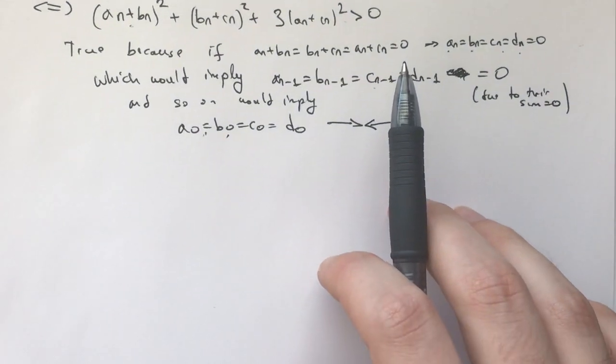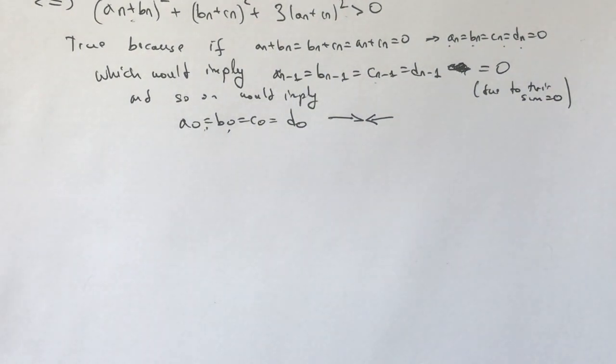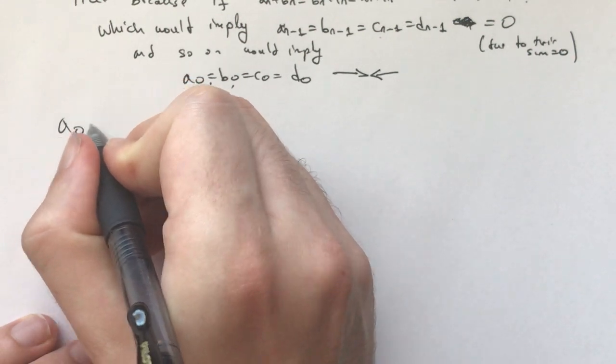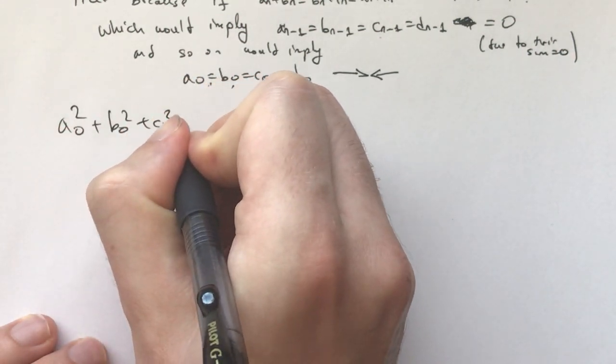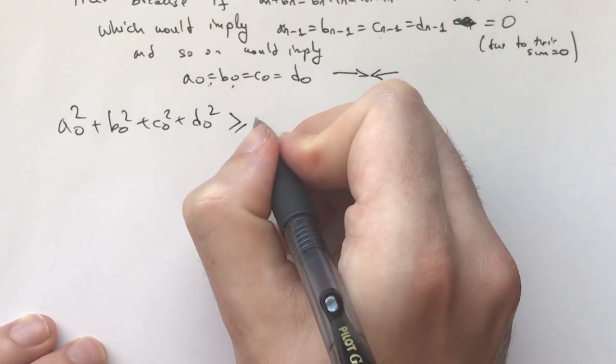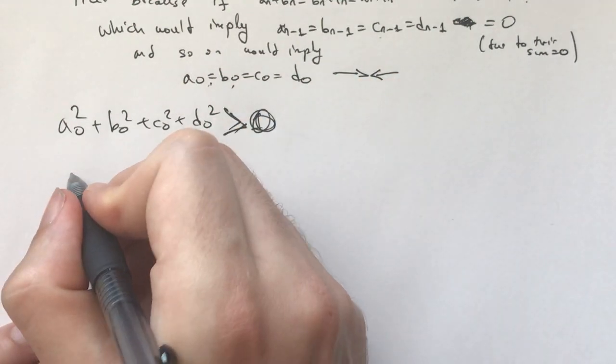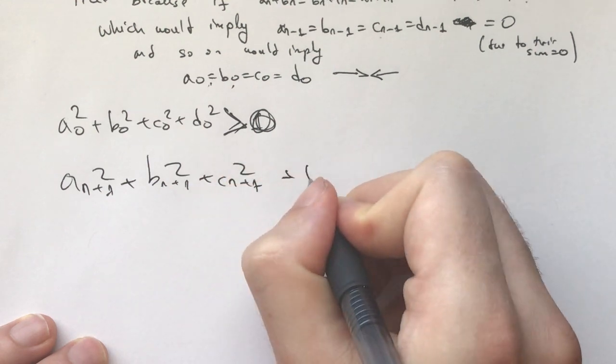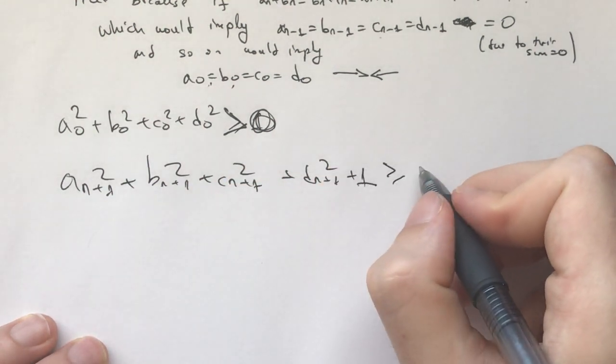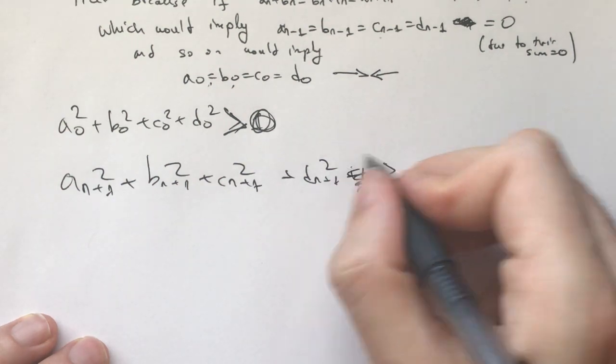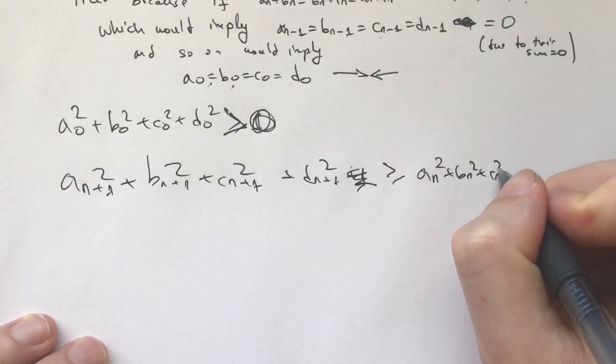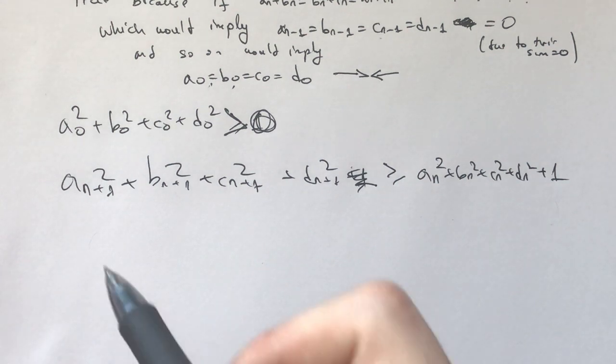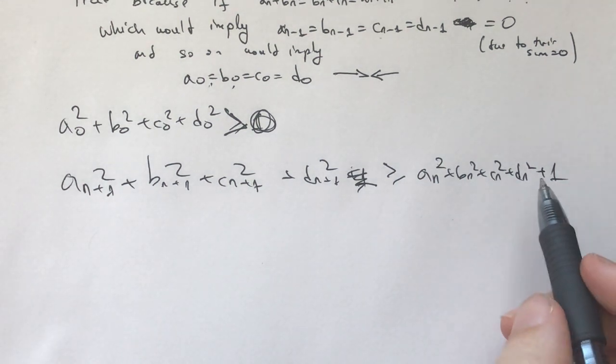Now with this, I invite you to take 5 to 10 minutes and formally prove that one of these numbers will eventually become arbitrarily large. Now, we know that a0 squared plus b0 squared plus c0 squared plus d0 squared is strictly greater than 0. And so, we also know that An+1 squared plus Bn+1 squared plus Cn+1 squared plus Dn+1 squared is greater than or equal to An squared plus Bn squared plus Cn squared plus Dn squared plus 1, because we're in the integers, so we can add a 1 here.